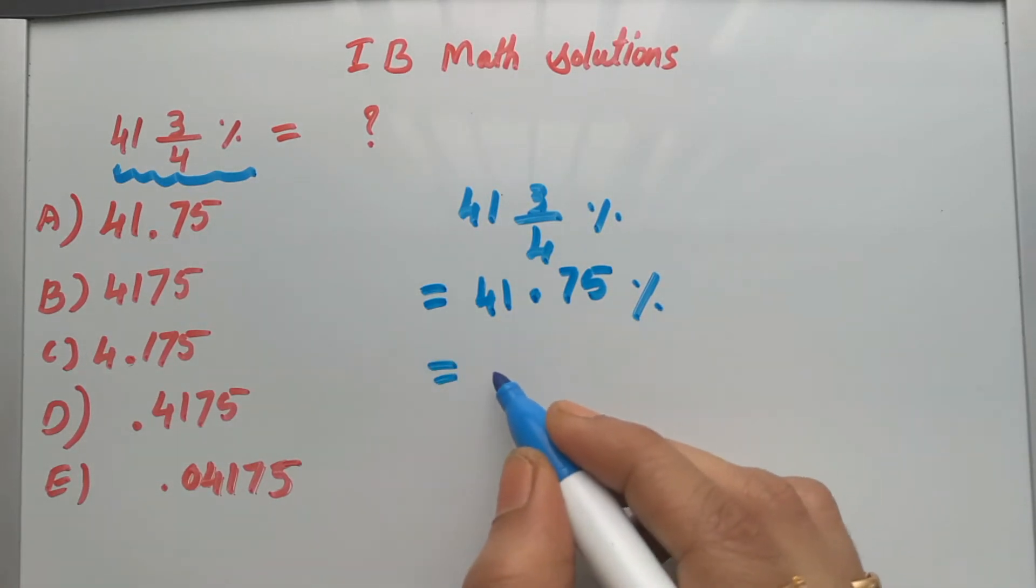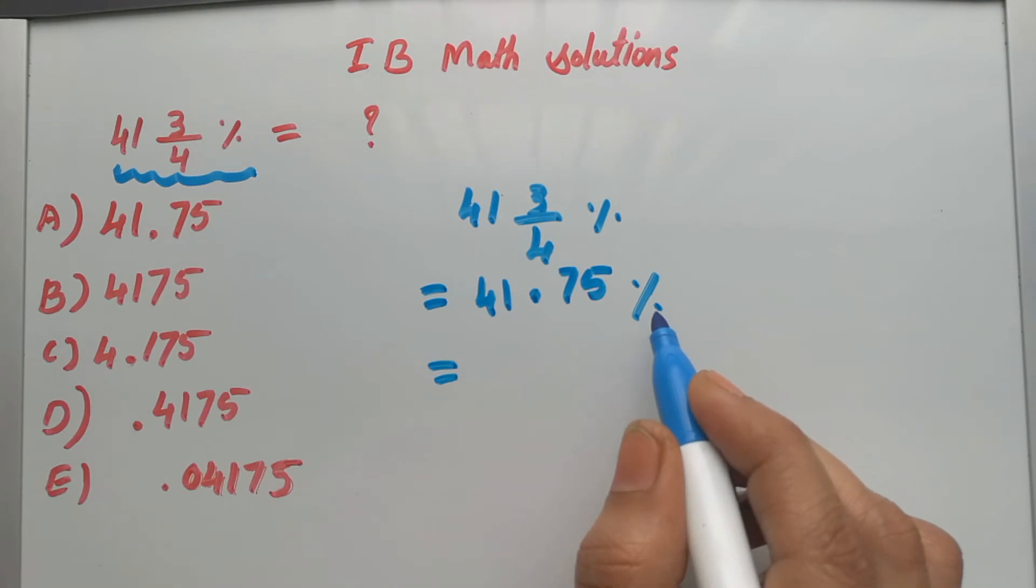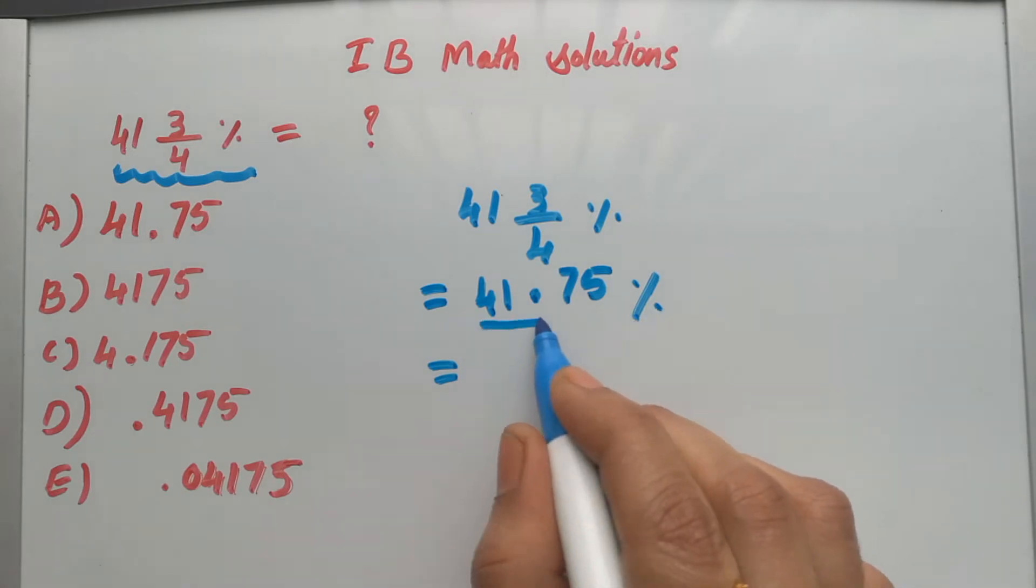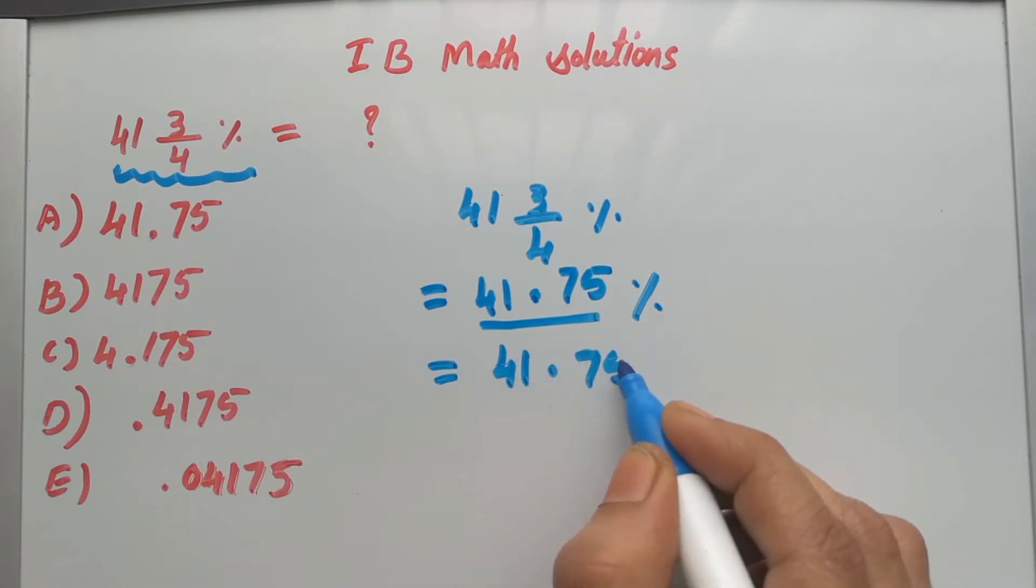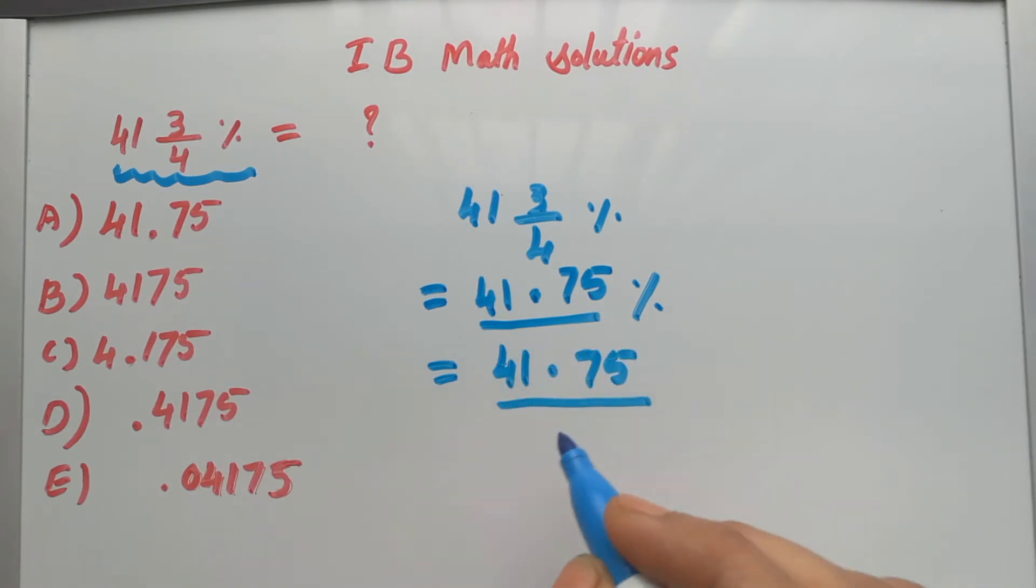Which is equal to... So percent is given, so that means you have to divide this number by 100. 41.75 divided by 100.